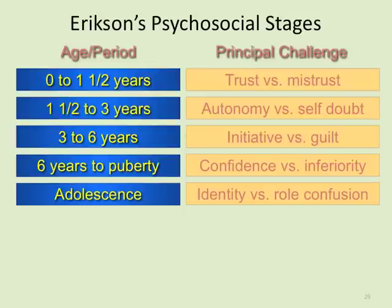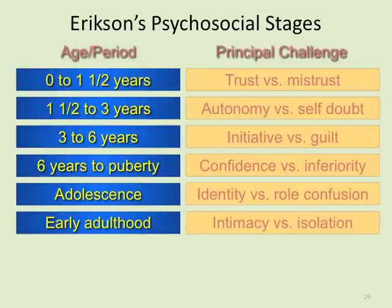After puberty and into adolescence, we enter identity versus role confusion. We're trying to figure out who we are — what we believe, what we think. Working in high school, you see how people change throughout the year: showing up in all-black rock outfits and then later looking more preppy. That's identity versus role confusion — what is my impact and how am I supposed to fit into these social roles?